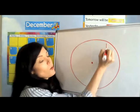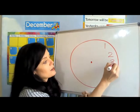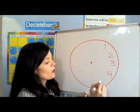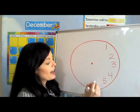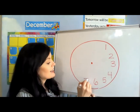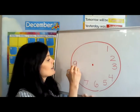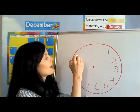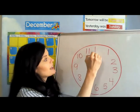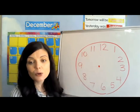Help me count: 1, 2, 3, 4, 5, 6, 7, 8, 9, 10, 11, 12. Okay, so we're all the way back around, so we're done.